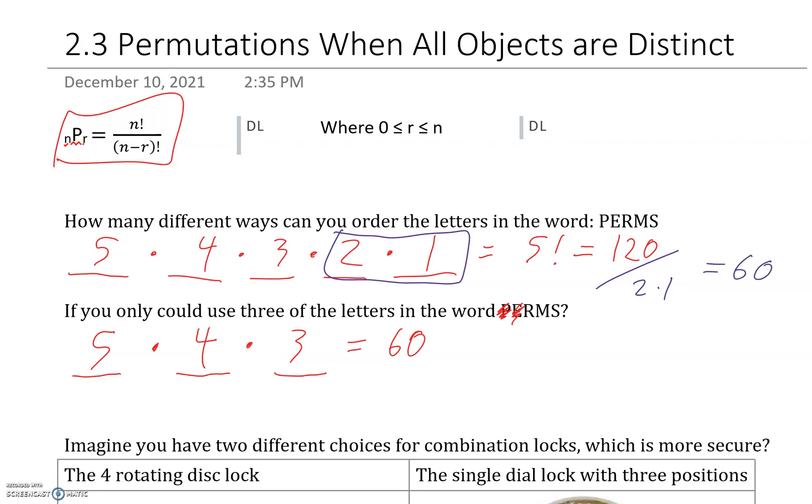So how can we write this out more generally? We can say that this five times four times three is five factorial divided by two factorial. Right? So the missing two times one that's over here. So this equals the 60.